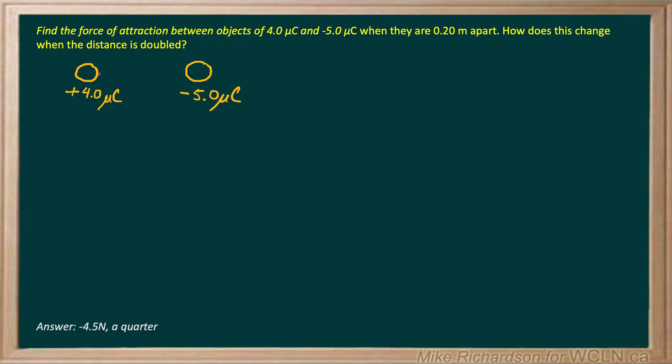So the charge on the left will be pulled to the right with some force, and according to Newton's third law, the charge on the right will be pulled to the left with an equal and opposite force. They're an interacting pair. How do I calculate that force? We use Coulomb's law.